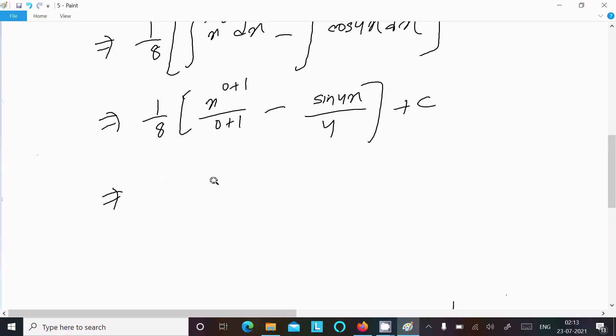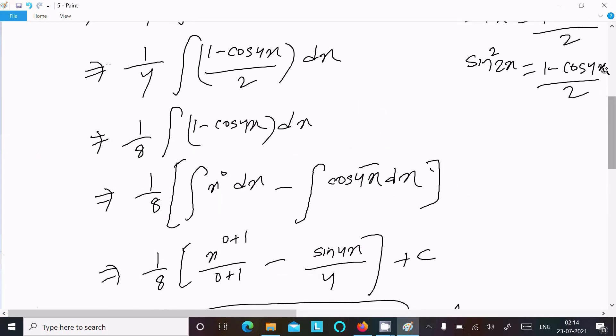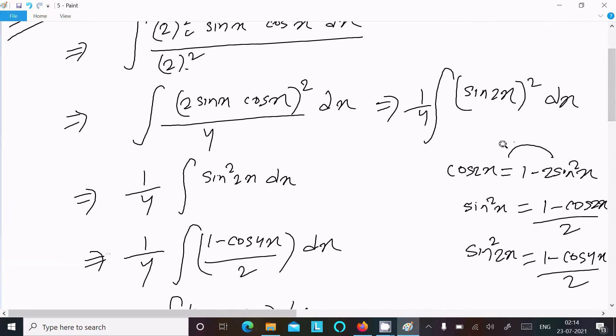We can write x/8 - sin 4x/32 + c. This is the final answer to this question, and this is the simplest way to do this integration.